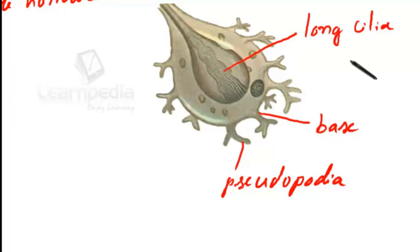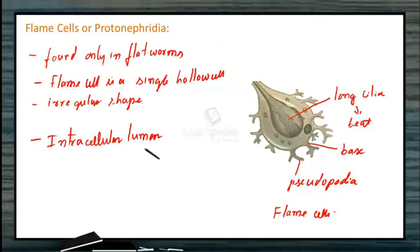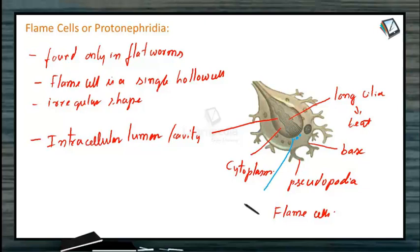The cilia continue to beat incessantly, and this resembles a flickering flame, that is why these are called flame cells. Each flame cell has an intracellular lumen or cavity, which has a few cilia. This is the cytoplasm, and cilia arise from the basal granules.